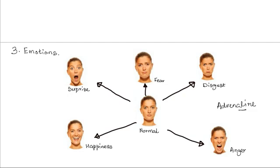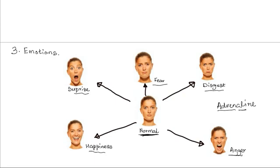Various emotional states — as demonstrated in these photographs — such as a neutral state, surprise, fear, disgust, anger, or happiness, all affect the rate of breathing. Different emotions affect the production of adrenaline. For example, when one is angry, there is an increase in the rate of adrenaline production, and many people tend to breathe faster. The same applies to fear, happiness, excitement, and surprise — all these increase the rate of adrenaline production and thus increase the rate of breathing.